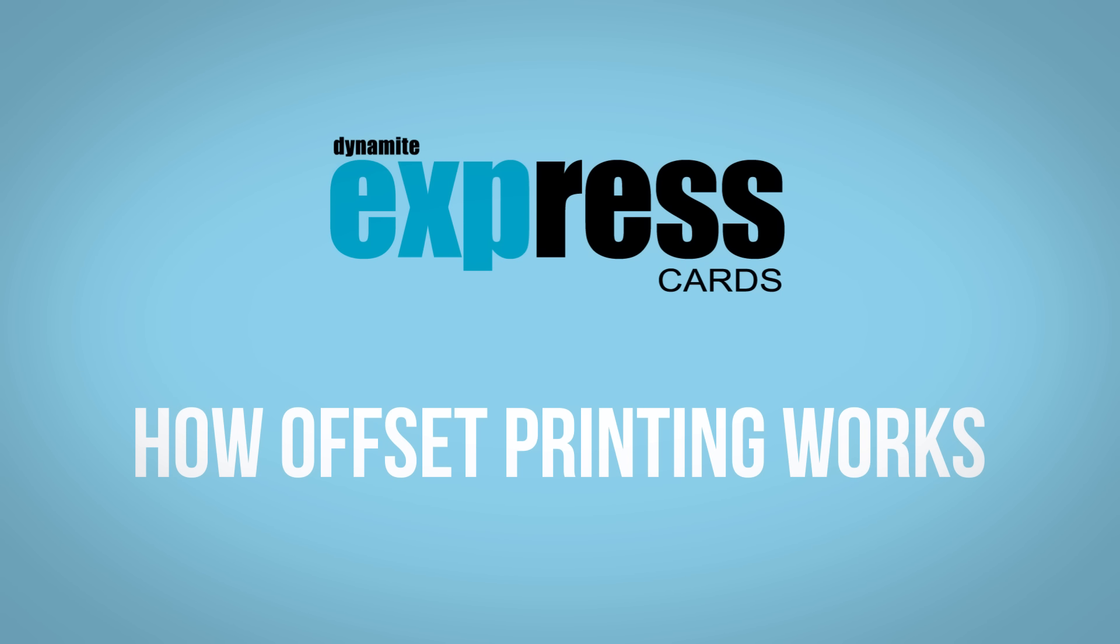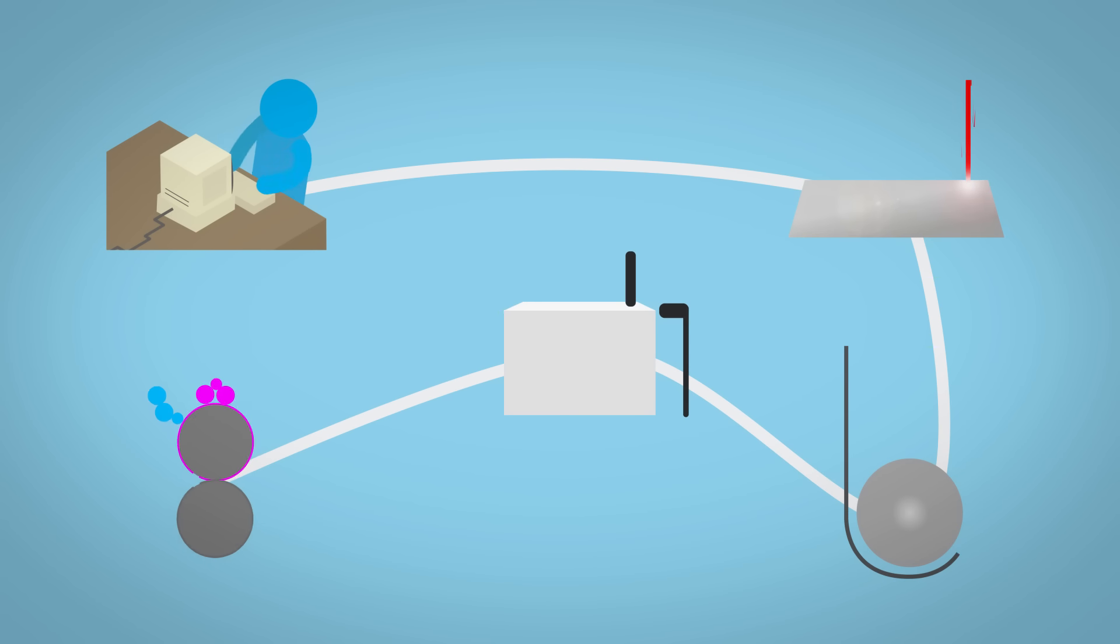Offset printing is one of the most common image reproduction methods of the modern age. But what is offset printing, and how does it work?